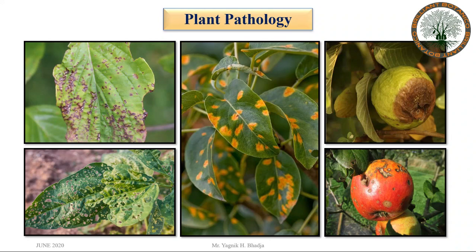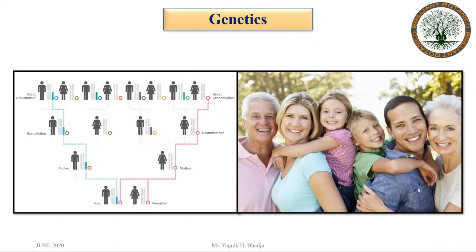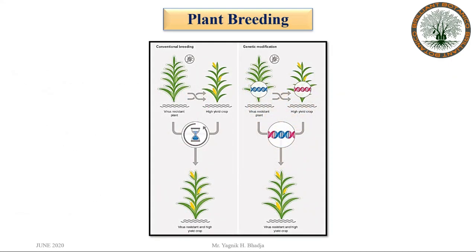Another branch is plant pathology. In plant pathology, we study the different types of diseases of plants, their symptoms, causal agents, and methods of control. Another branch is genetics, which deals with the study of heredity and variations. Another branch is plant breeding, which deals with the development of improved varieties of plants.